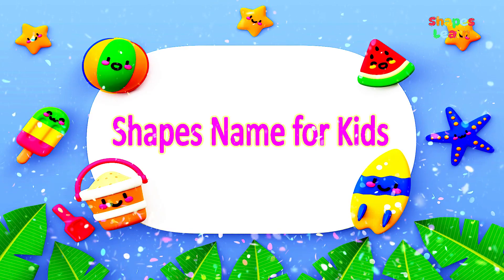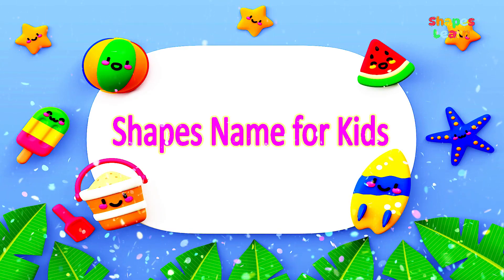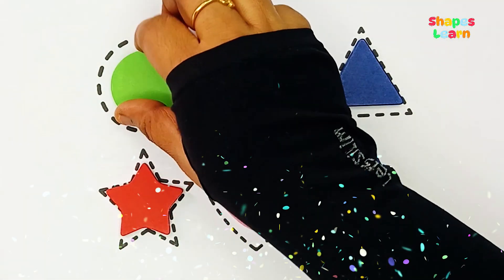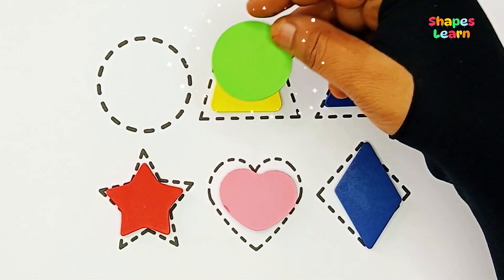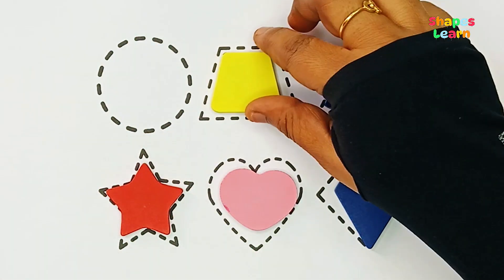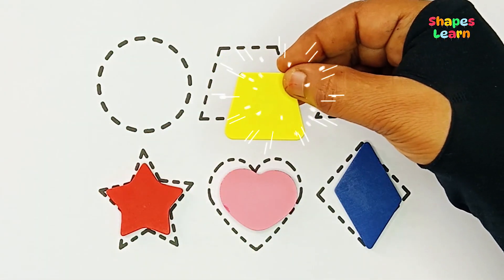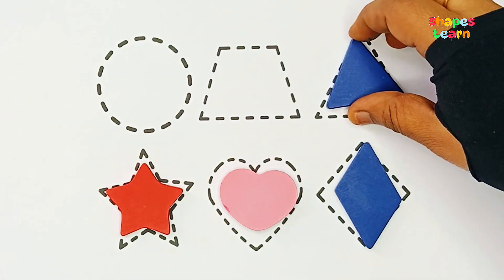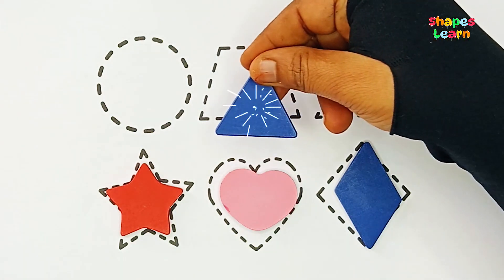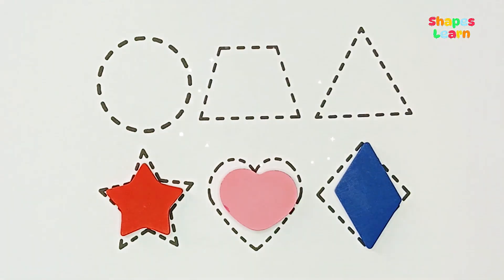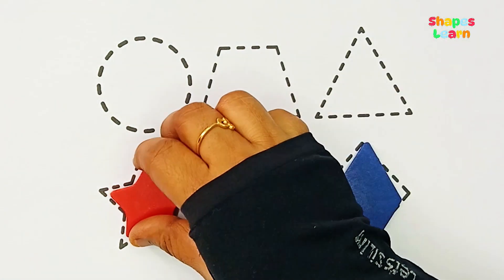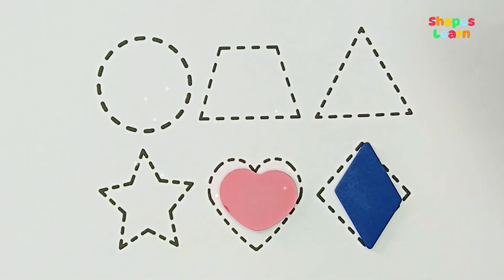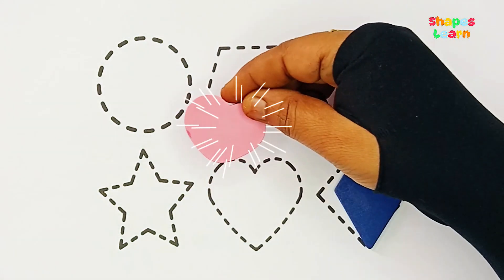Shapes Names for Kids. Circle, Square, Triangle, Star, Heart.